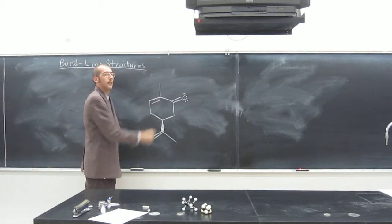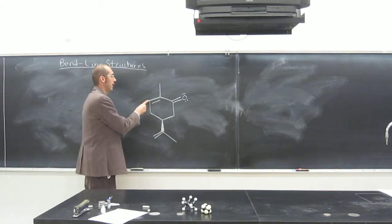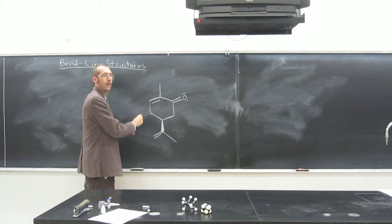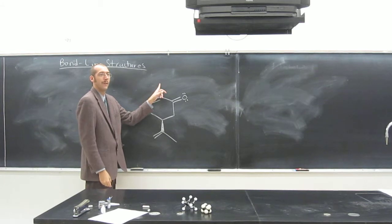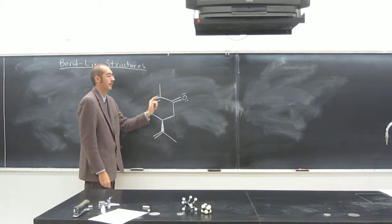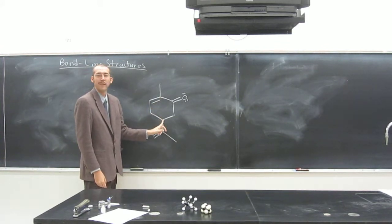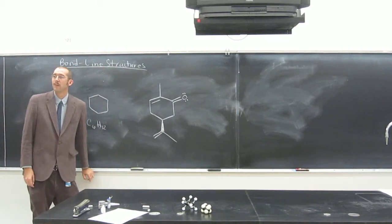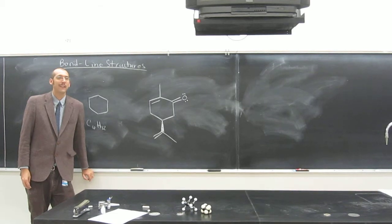So what about here? Carbon. How many hydrogens? None. This one? Carbon. How many hydrogens? One. Carbon. How many hydrogens? Three. What about here? We already did that one, right? What about there? Carbon. How many hydrogens? One.